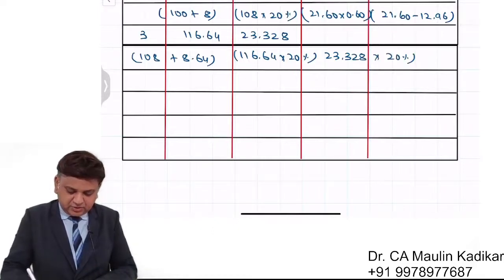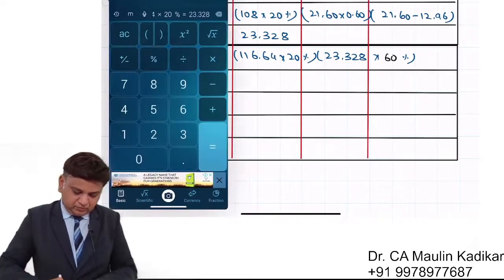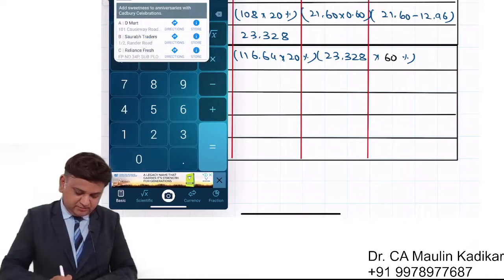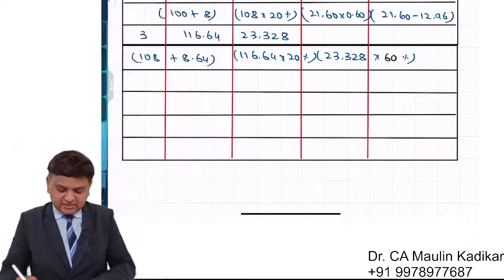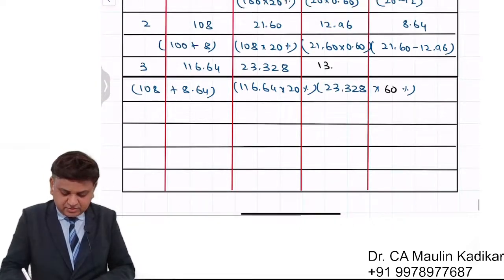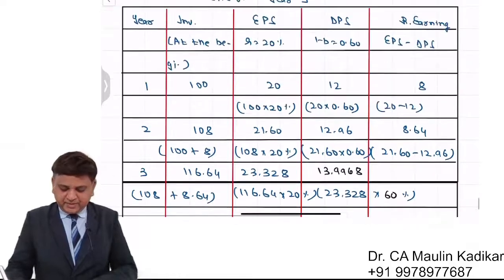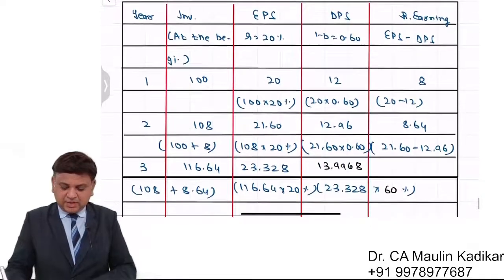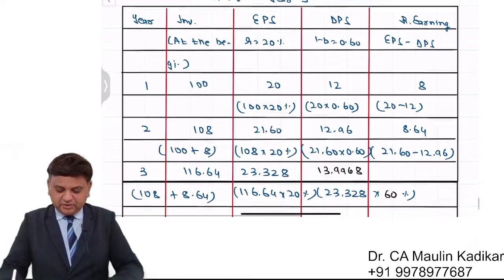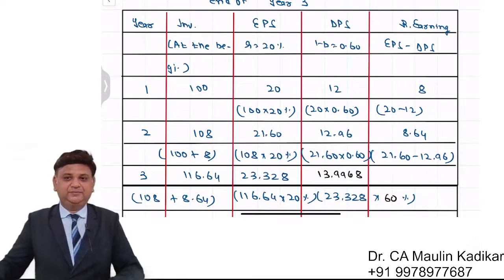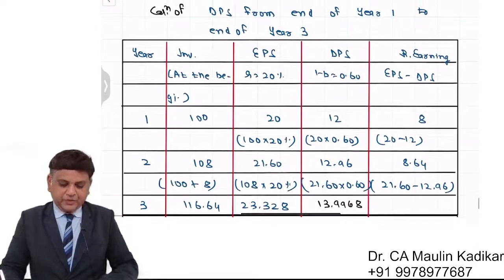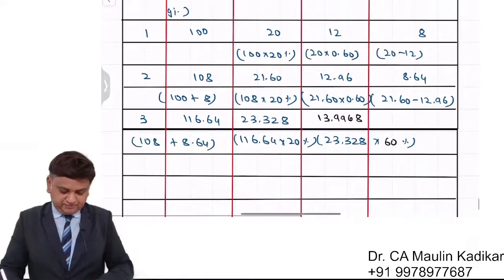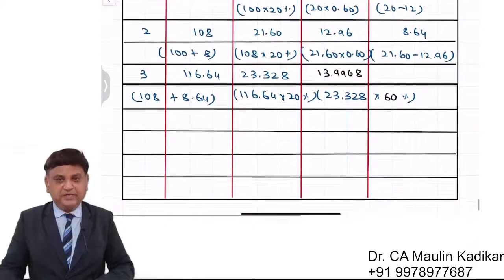Of that, 60% will be paid in the form of dividend. So 23.328 × 60% gives the answer: 13.9968. The amount of the dividend per share at the end of the third year will be 13.9968. This is the dividend per share across the three years; we are principally interested in the third year dividend.